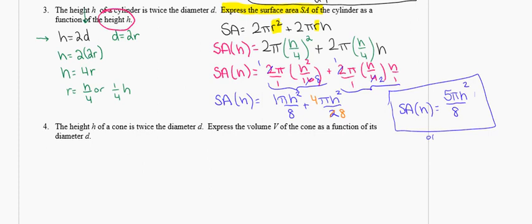This could also be written as five-eighths πh squared — same thing. I love the integration of geometry with algebra. If you're following along and can say you understand why each step was taken, you're in a really good place. This is pretty complicated and complex, which is probably why I like it.